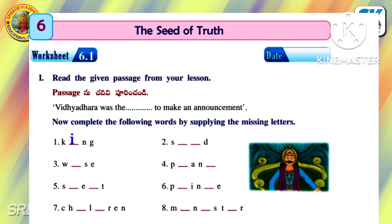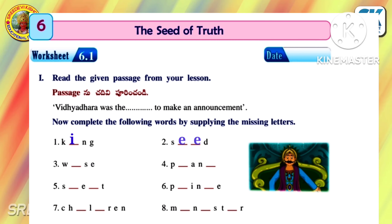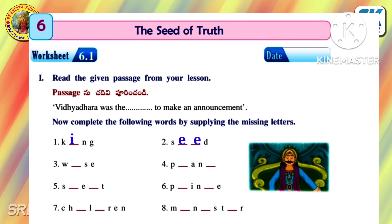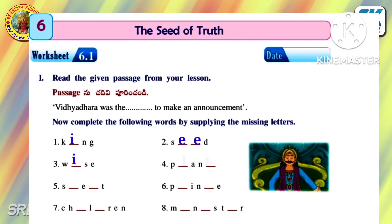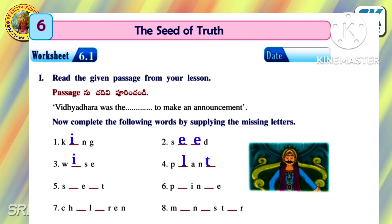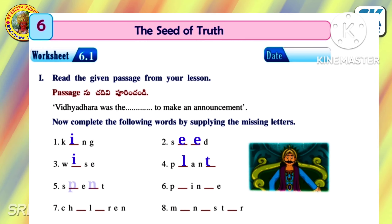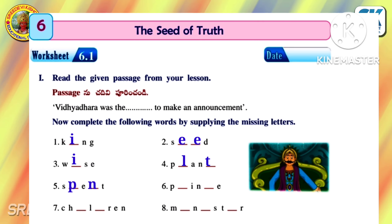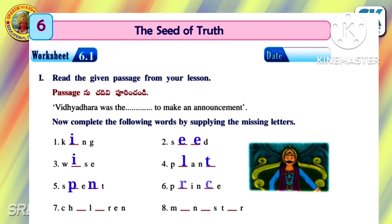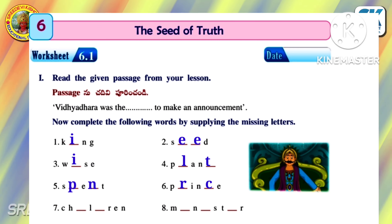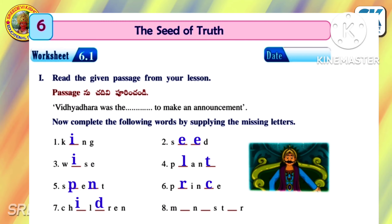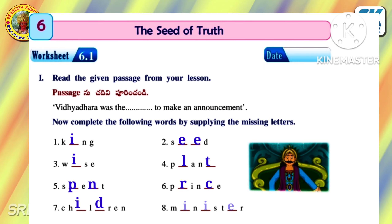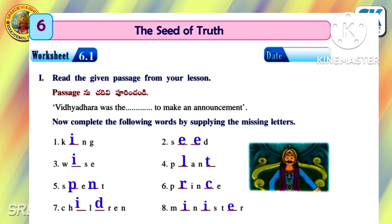First: K-I-N-G — King. Second: S-E-E-D — Seed. Third: W-I-S-E — Wise. Fourth: P-L-A-N-T — Plant. Fifth: S-P-E-N-T — Spent. Sixth: P-R-I-N-C-E — Prince. Seventh: C-H-I-L-D-R-E-N — Children. Eighth: M-I-N-I-S-T-E-R — Minister.